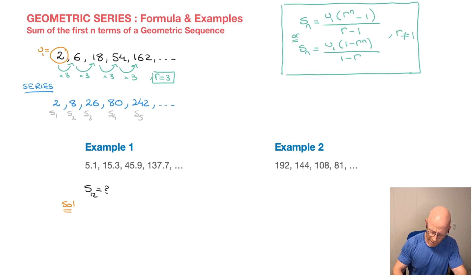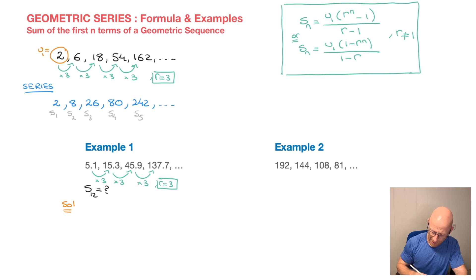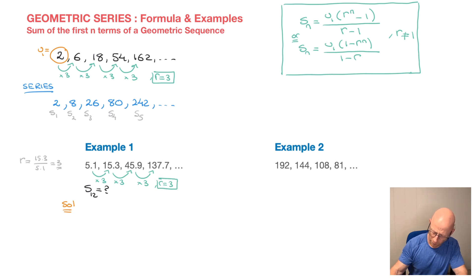Looking at the sequence, we can see that going from one term to the next we're always multiplying by 3. So the common ratio r is equal to 3. If you have trouble seeing that, use your calculator and divide the second term by the first: 15.3 divided by 5.1 equals 3. The first term is u sub 1, which is equal to 5.1.